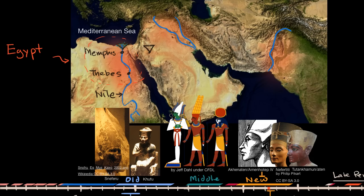The Nile flows from eastern mid-Africa up into the Mediterranean Sea. Because it has this northward flow, the southern parts of the river are upriver and are called the upper Nile. So the upper Nile is actually south of the lower Nile — that's because the upper Nile is upriver. It's also flowing from higher elevations to lower elevations, so as you go south, you get to higher and higher elevations.